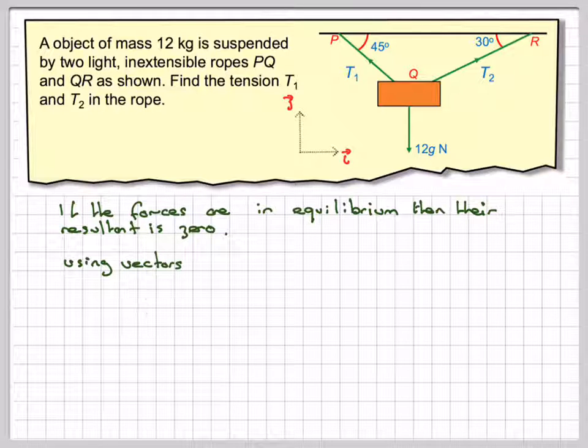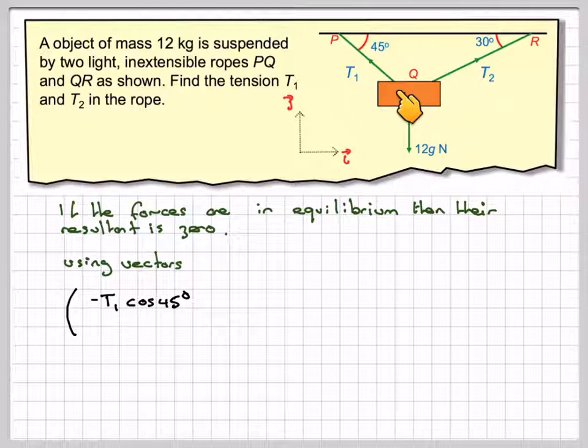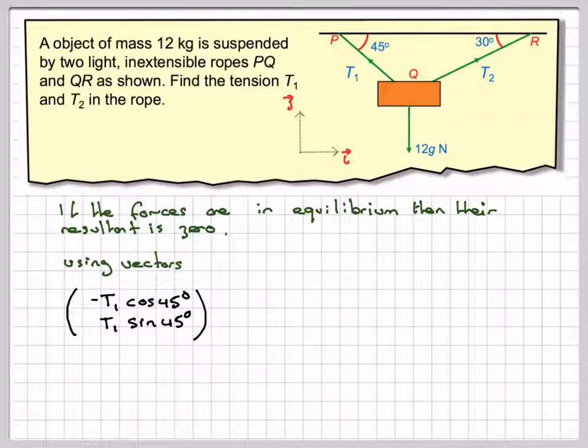So using vectors, if we look at the components of T1 here, this one going in the opposite direction will be minus T1 cos 45. And the vertical, as it's in the upwards direction, will be T1 sin 45. And then if we add to that T2 cos 30, which is the one going that way, and the one going this way will be T2 sin 30.